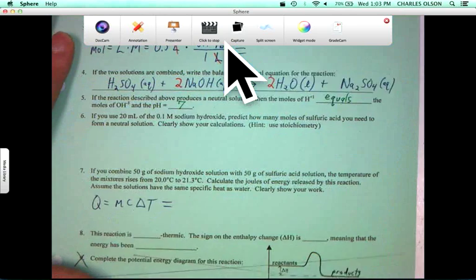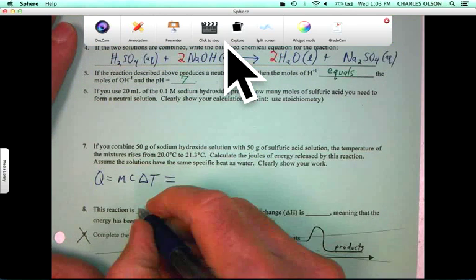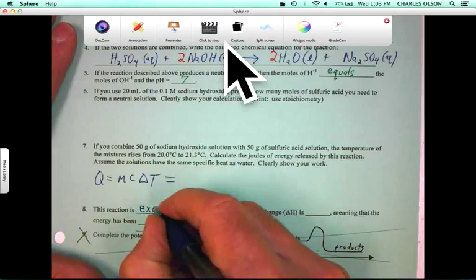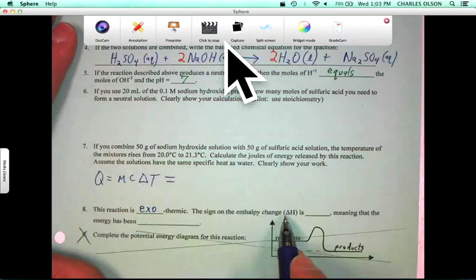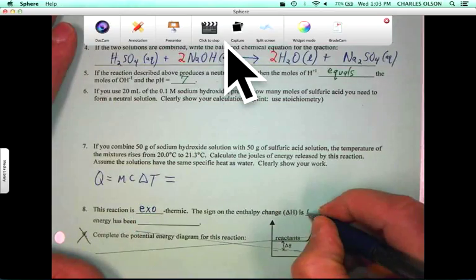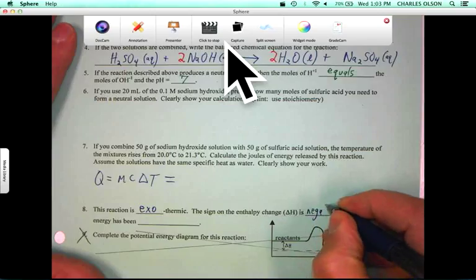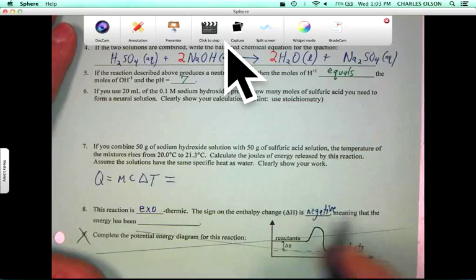And this reaction is releasing heat, so the reaction is exothermic, and the sign on delta H will be negative, meaning that energy has been released.